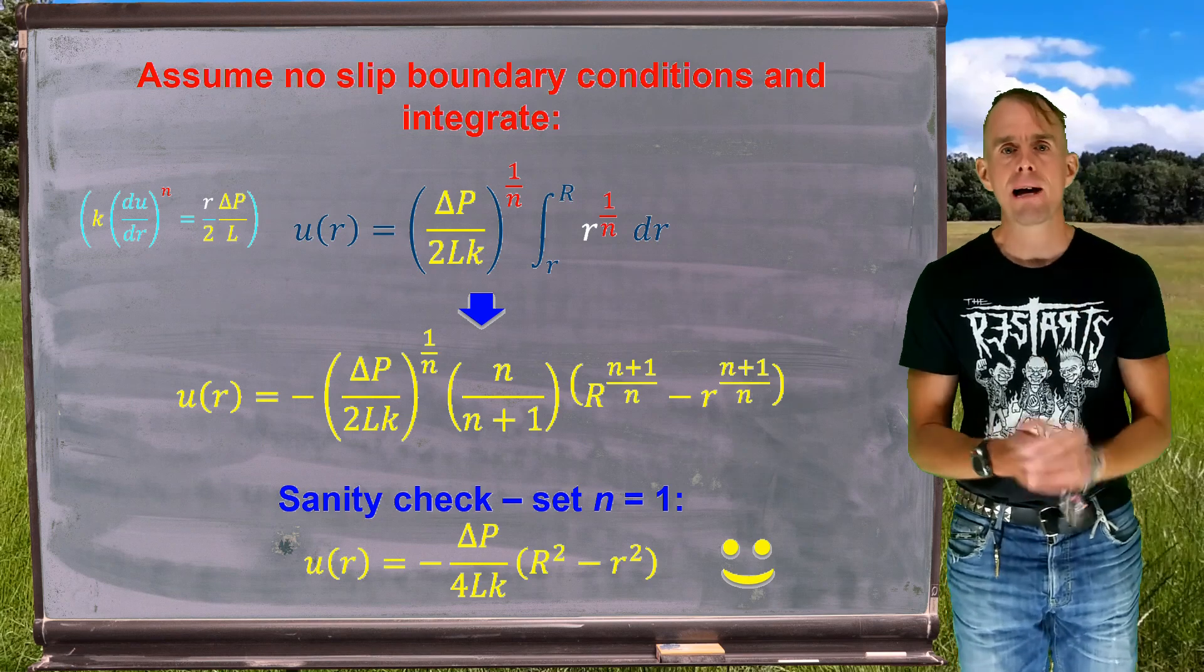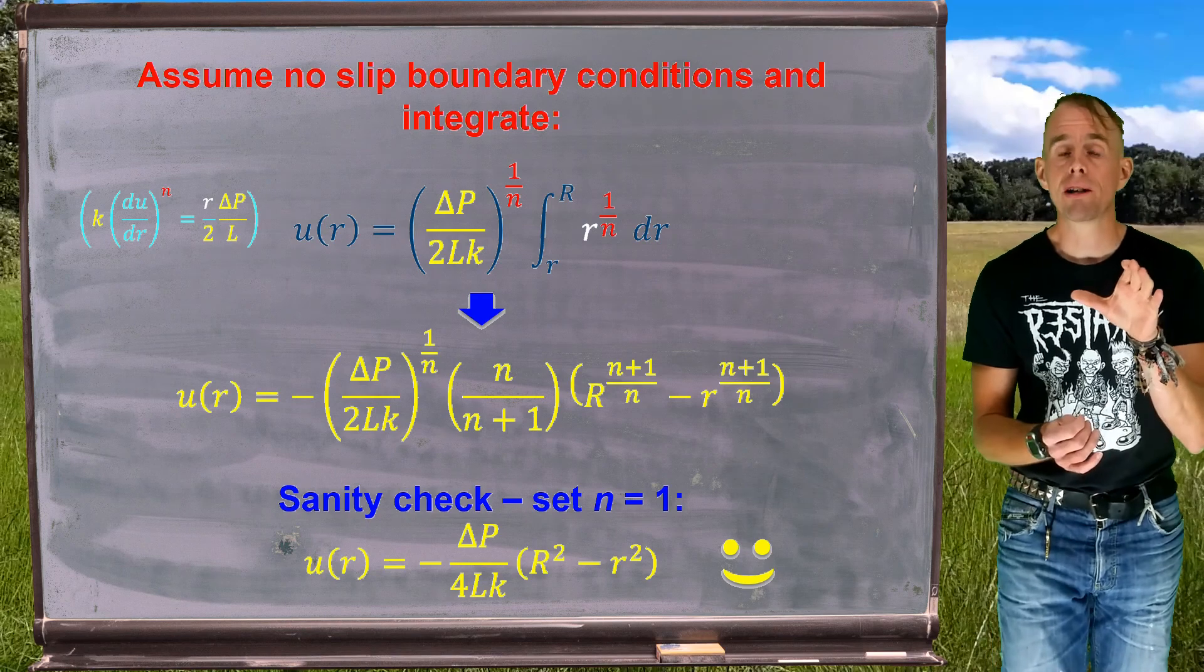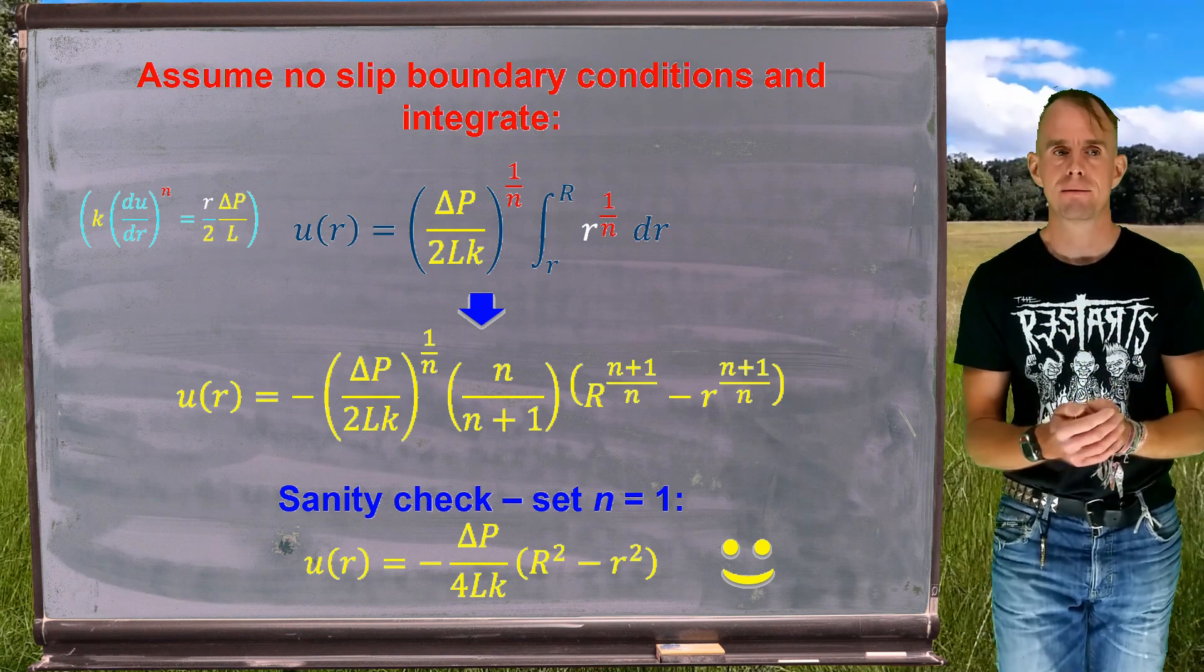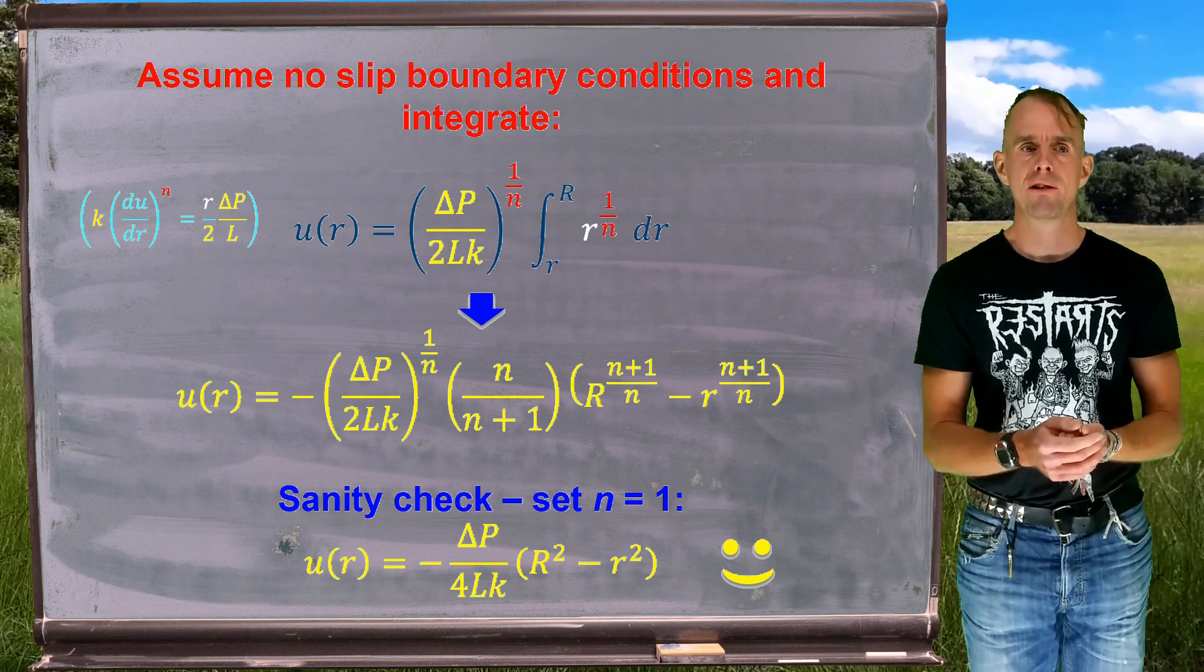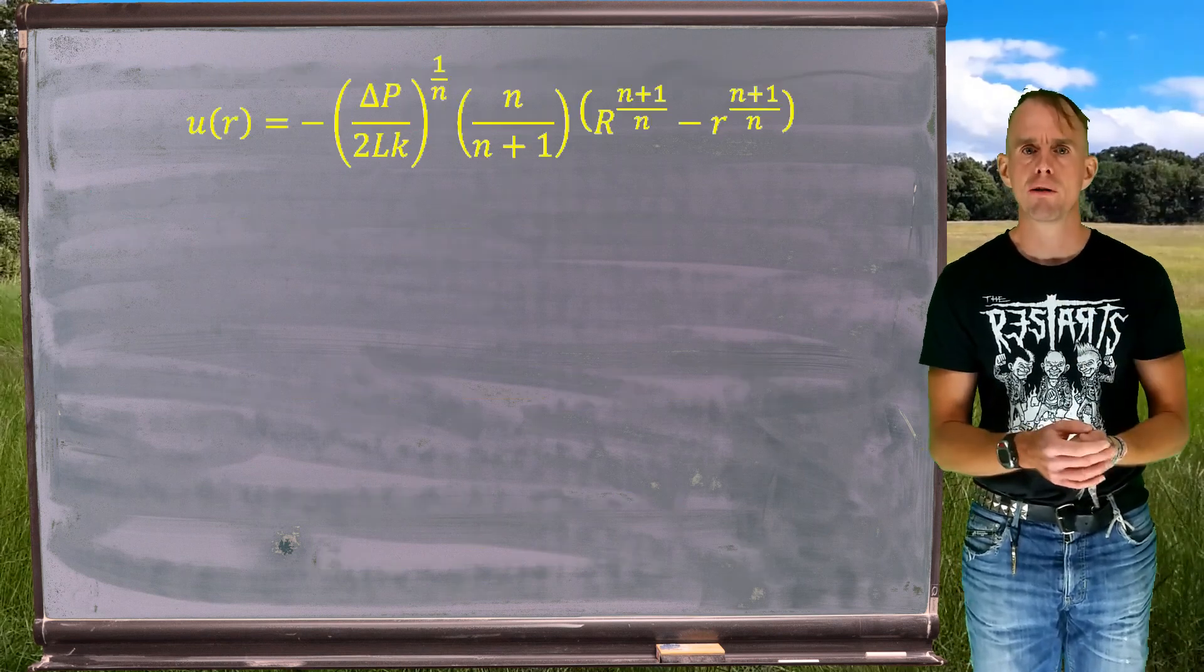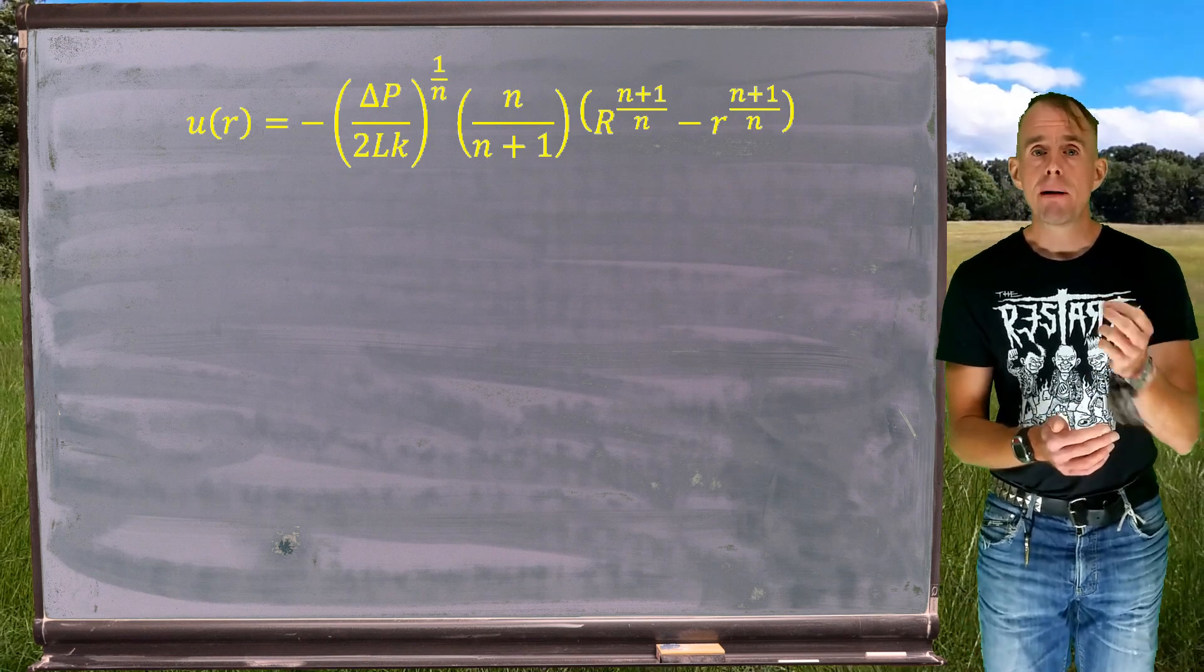So now that we're happy that we have our parabolic flow, we can continue to look for an expression for volumetric flow rate. So there on the blackboard is the form of our velocity field with all those fractions involving n or n over n plus 1 or n plus 1 over n.